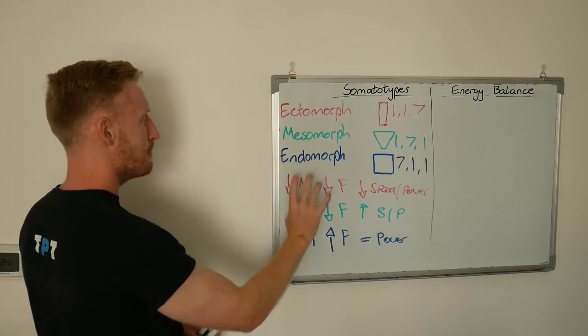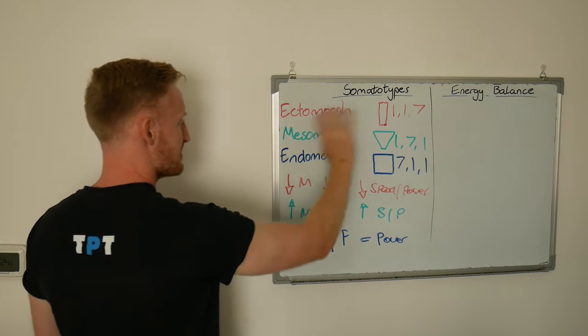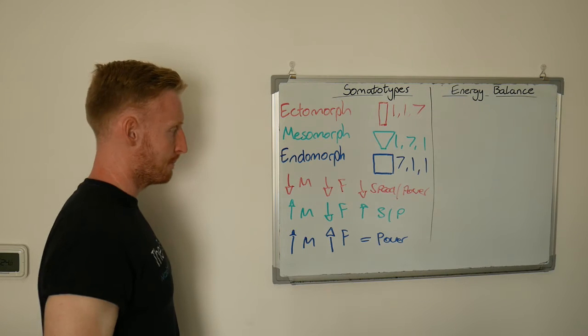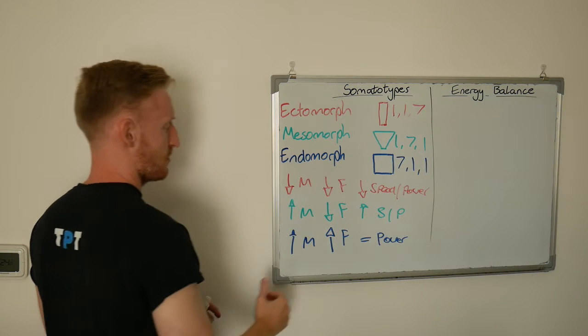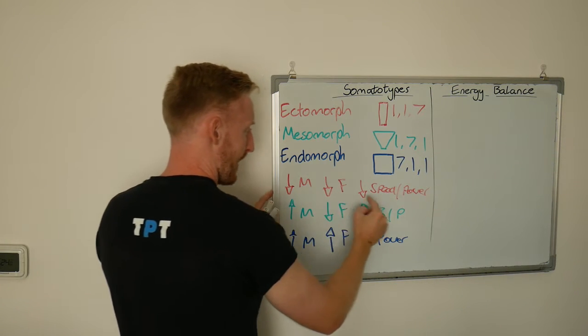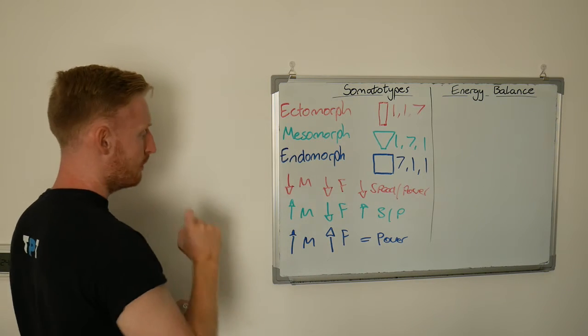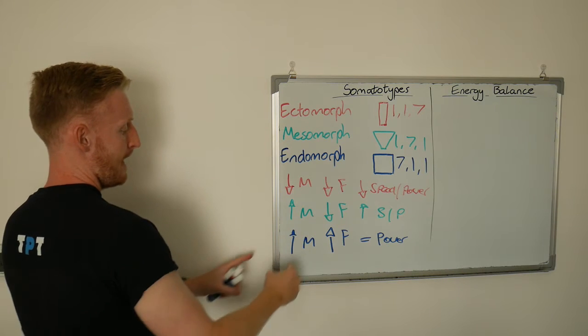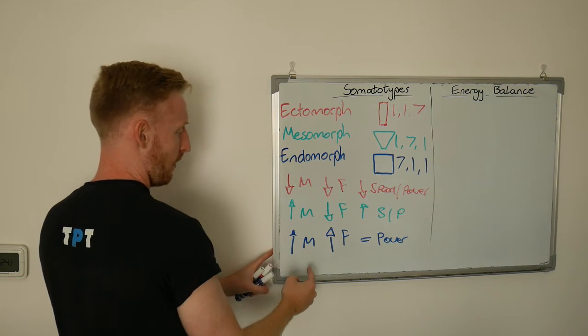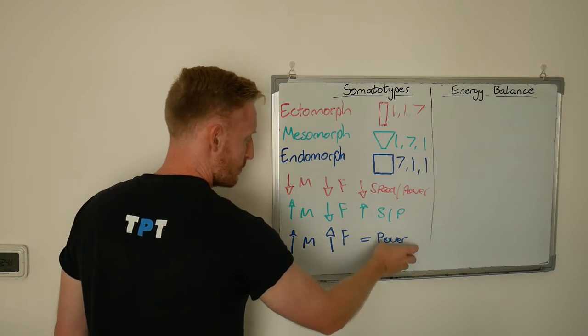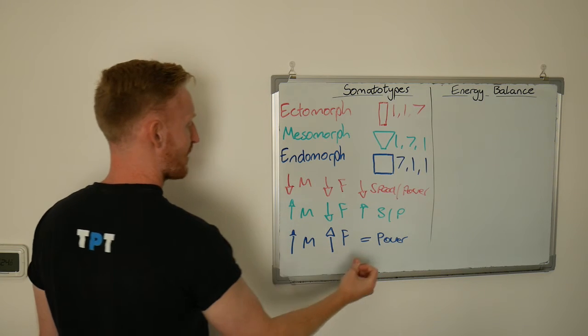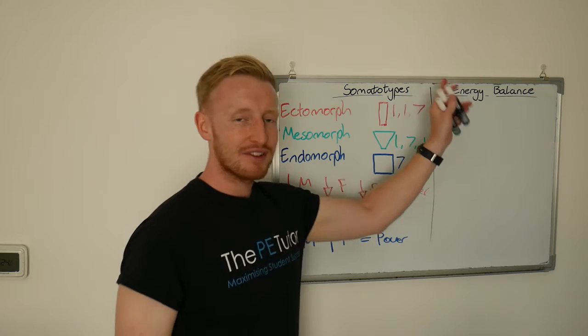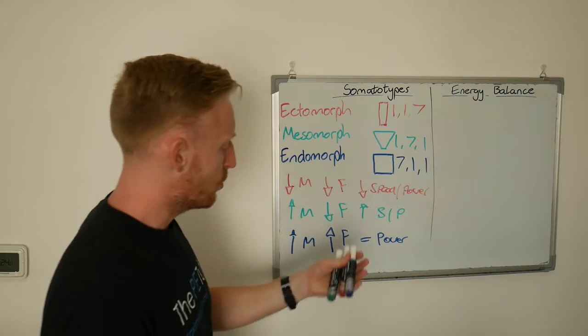So somatotyping, three different areas. Ectomorph, mesomorph, endomorph. We've got the three typical shapes and how to score them. Then we've got some characteristics. Low muscle, low fat, low speed and power for our ectomorph. High muscle, low fat, high speed and power for mesomorph. And then high muscle and high fat, and relatively okay power but high strength when it comes to endomorphs.